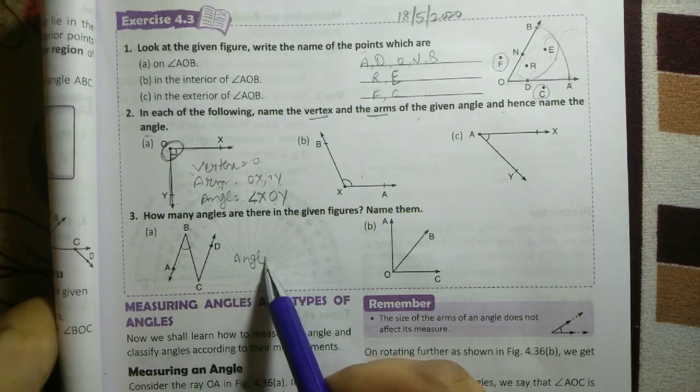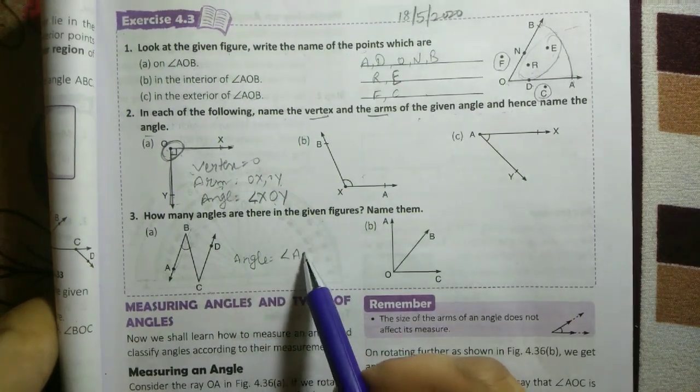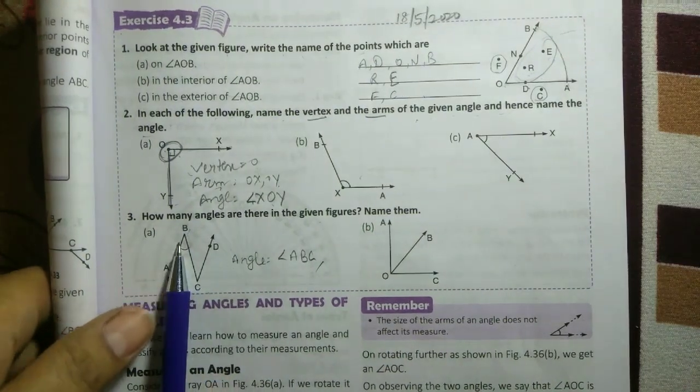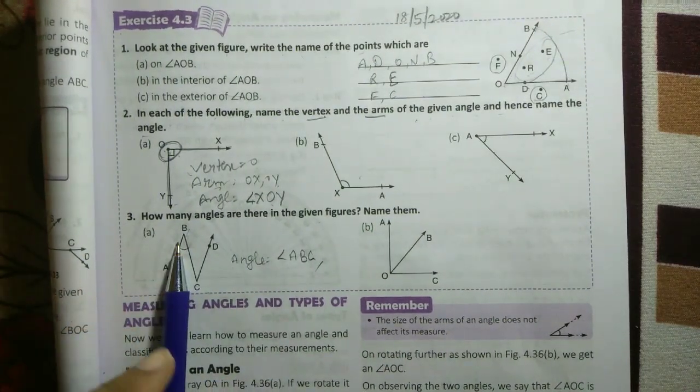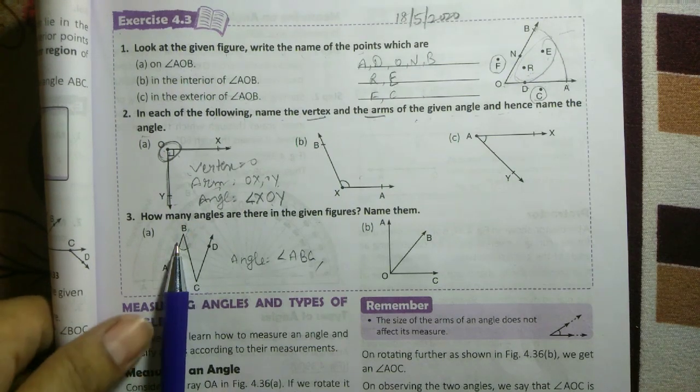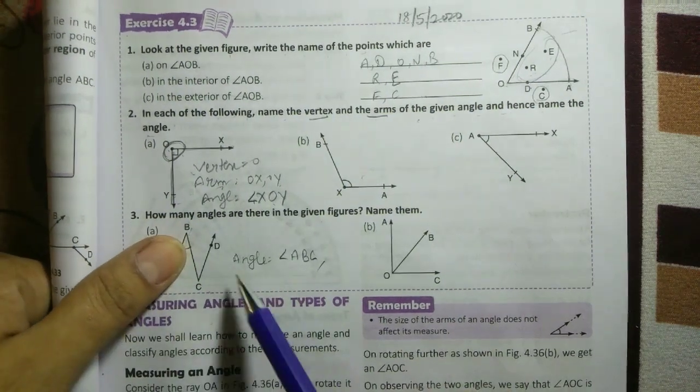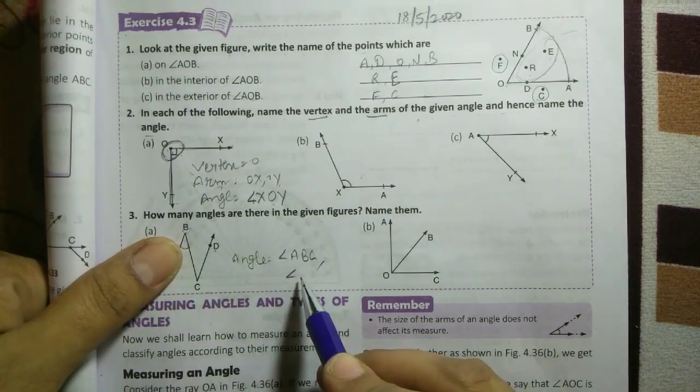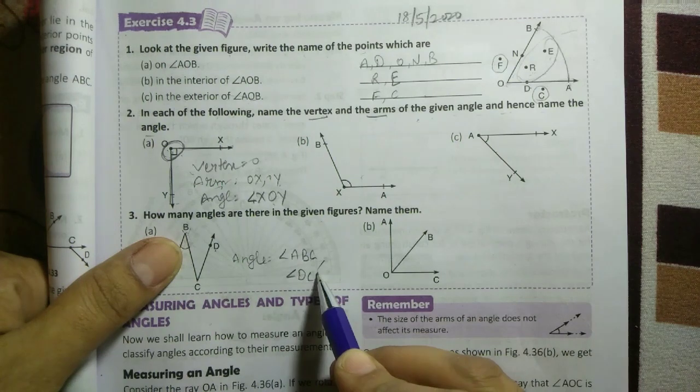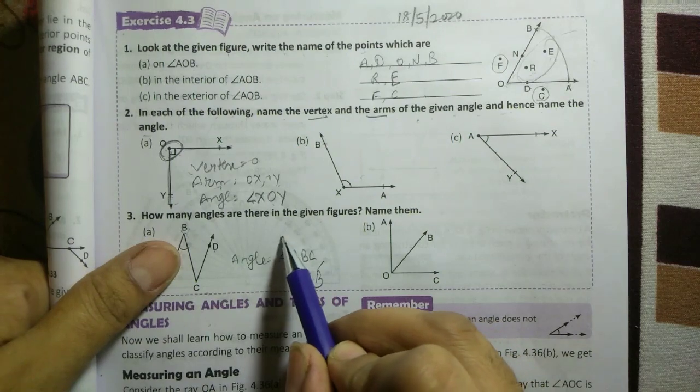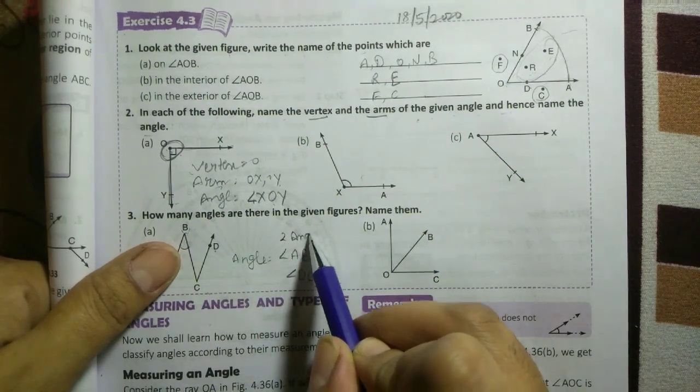After that, we have this line, we have this angle. How many angles are there? Angle BCD or we can write this angle DCB. We hide them. So angle DCB. How many angles are there? One and two. So we have two angles.